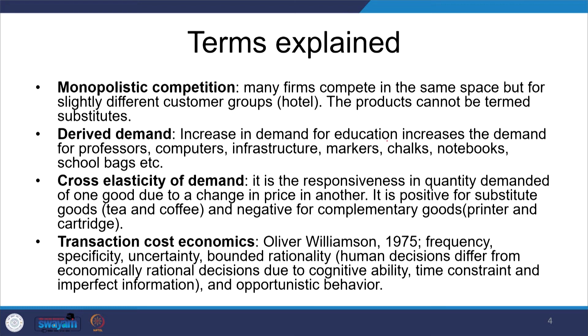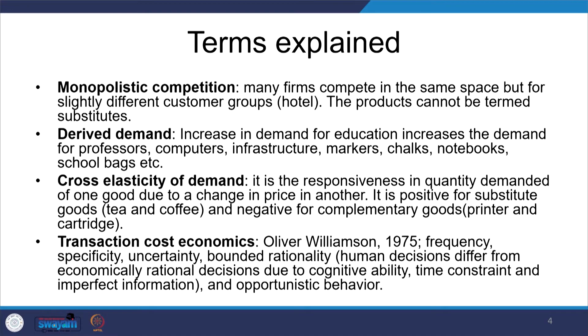Derived demand: an increase in demand for education increases the demand for professors — who will be in higher demand — as well as demand for computers, infrastructure, markers, pointers, chalks, notebooks, and bags. If the government increases the education budget, it is not only education directly affected; all related and complementary industries connected to education are positively affected. Cross elasticity of demand is the responsiveness in quantity demanded for one good due to a change in price of another: positive for substitutes like tea and coffee, negative for complementary goods like printer and cartridge.